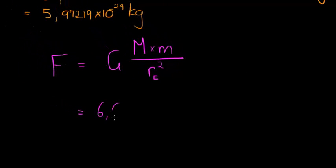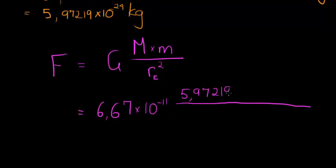Now let's substitute what we know. We know the gravitational constant is 6.67 times 10 to the power of negative 11. The mass of the Earth we saw was 5.97219 times 10 to the power of 24. The mass of any object we don't know yet, that we will leave as a parameter in our equation. Then we have the radius of the Earth, which we know is 6,371 times 10 to the power of 6 meters, and this is being squared.